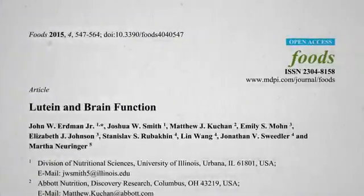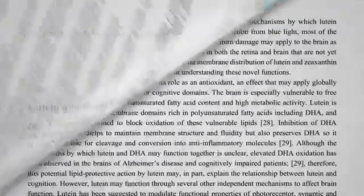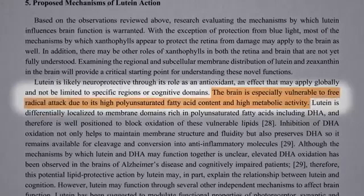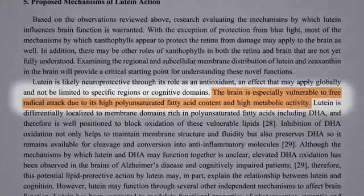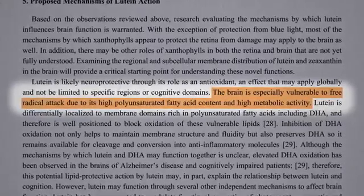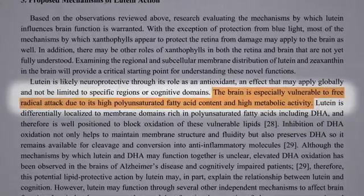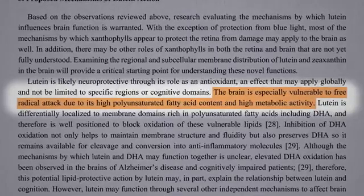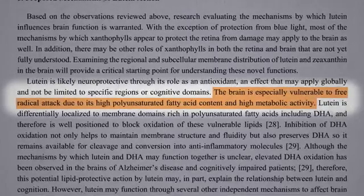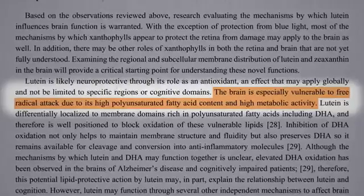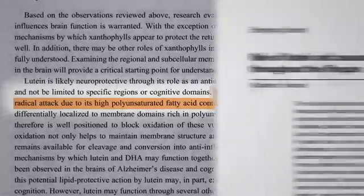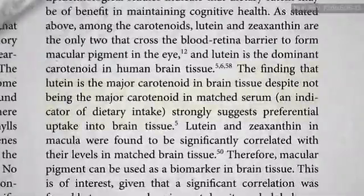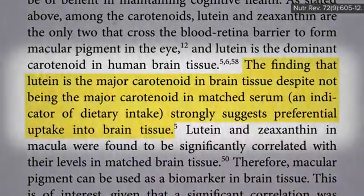The brain is especially vulnerable to free radical attack and oxidative stress due to its high fat content and high metabolic activity. You don't want your brain to go rancid, so you'd think one of the major fat-soluble dietary antioxidants like beta-carotene would step in. But the major carotenoid concentrated in the brain is actually lutein.